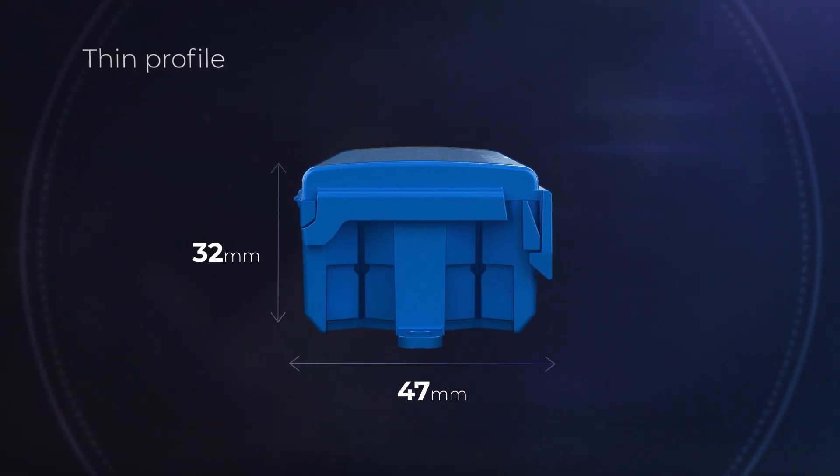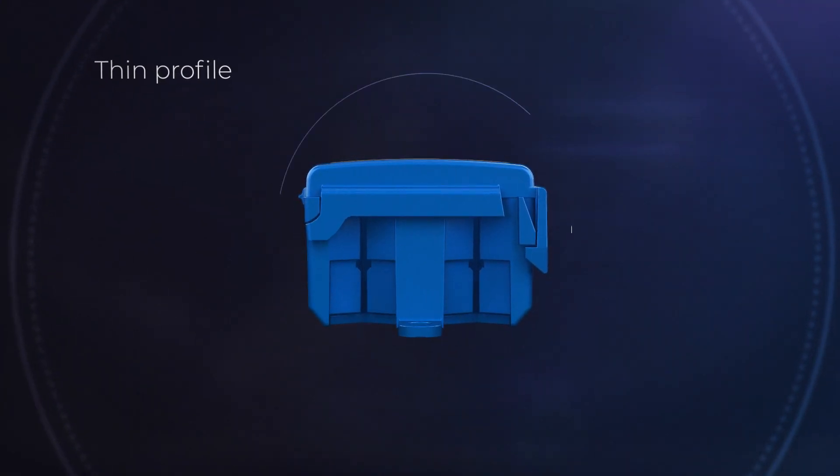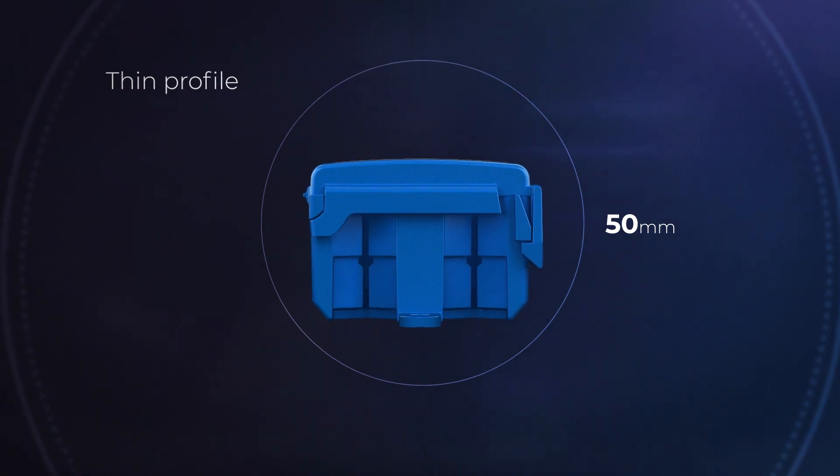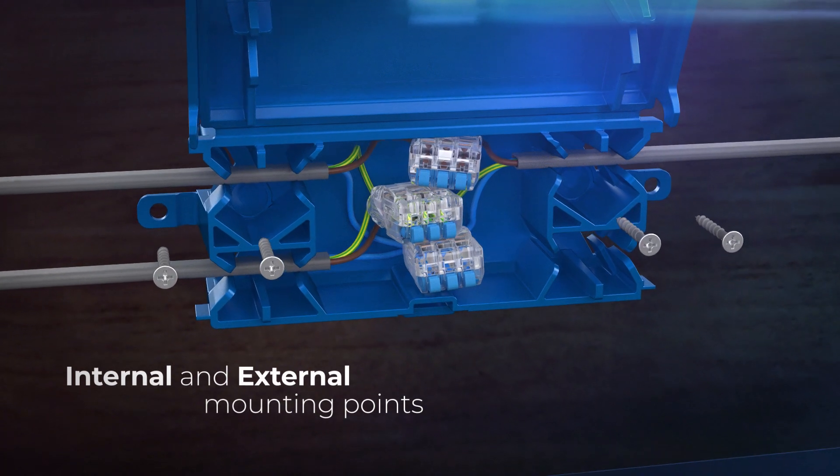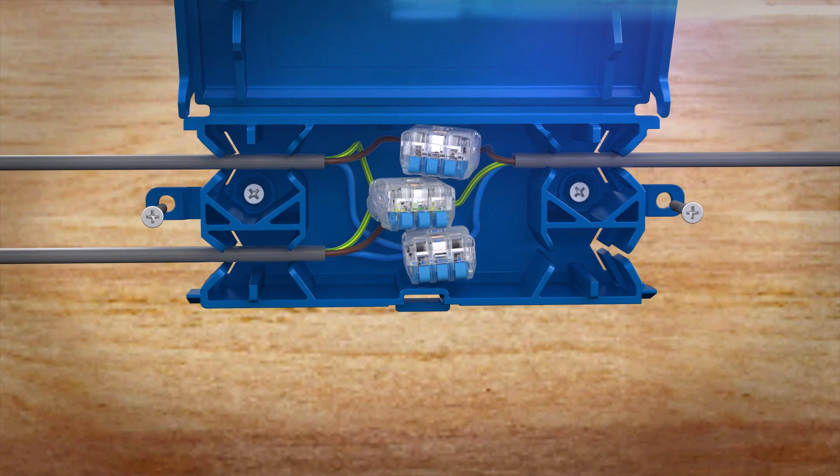A thin profile allows the Insure Box to fit to a 50mm hole for spotlight or similar installations. To finish the installation, secure the Insure Box via the internal or external mounting points.